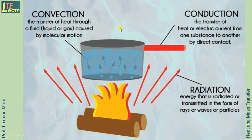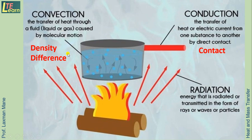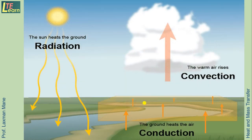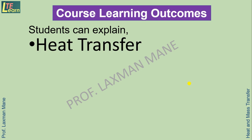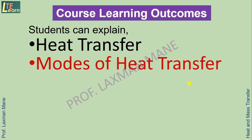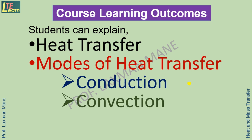In summary: conduction takes place by direct contact, convection takes place due to density difference, and radiation occurs in the form of waves. As an example, the sun heats the ground by radiation, the ground heats the air by conduction, and the warm air rises up by convection. At the end of this session, you can explain heat transfer and modes of heat transfer as conduction, convection and radiation.